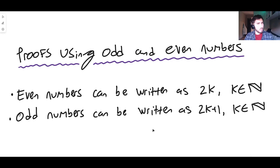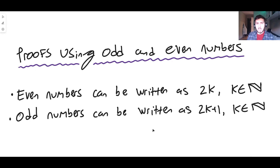We touched on this in the previous video with an example using odd and even numbers. This is something very common that you need to know for your A-level maths exams — the ability to express odd and even numbers algebraically without necessarily being explicitly told to do so. You can get proof questions where the method requires odd and even numbers even if the question doesn't mention them.